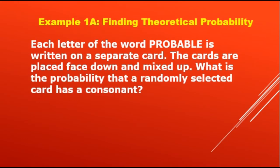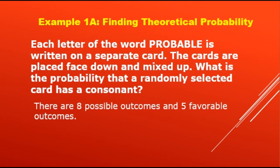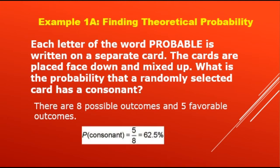Example 1A — Finding Theoretical Probability. Each letter of the word 'probable' is written on a separate card. The cards are placed face down and mixed up. What is the probability that a randomly selected card has a consonant? The word 'probable' consists of 8 letters, and there are 5 consonants. So there are 8 possible outcomes and 5 favorable outcomes. P(consonant) = 5 over 8, or 62.5%.